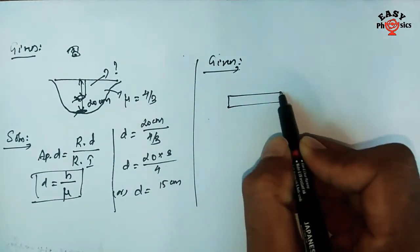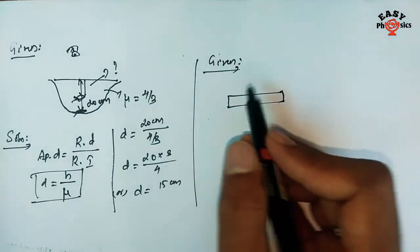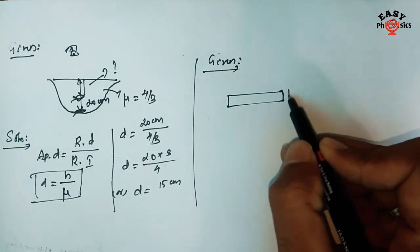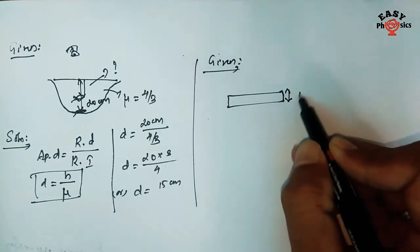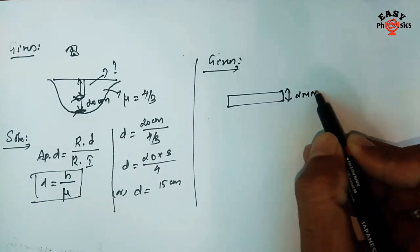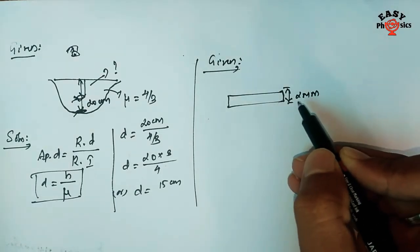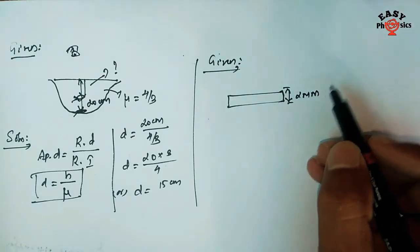We have a thick glass plane that is 2 mm thick. Light passes from one side to the other across this 2 mm distance.